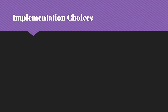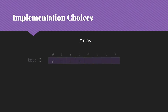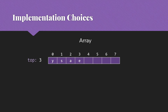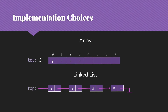We have two implementation choices when it comes to actually writing our stacks. One is an array — we store the elements in the array, the bottom of the stack is at index zero, and the top is at however many elements we actually have. As we add elements, we're adding to the end of the array. Our other option is a linked list, where the top of our stack would be the head of our list. We insert items at the front and remove from the front, so the end of the list is the bottom of the stack.